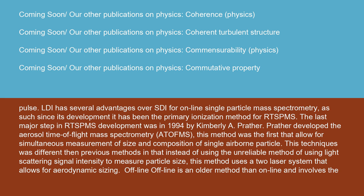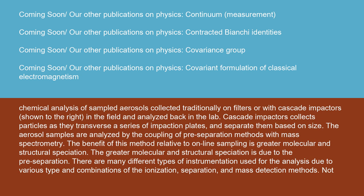Offline mass spectrometry is an older method than online and involves the chemical analysis of sampled aerosols collected traditionally on filters or with cascade impactors in the field and analyzed back in the lab. Cascade impactors collect particles as they traverse a series of impaction plates and separate them based on size. The aerosol samples are analyzed by the coupling of pre-separation methods with mass spectrometry. The benefit of this method relative to online sampling is greater molecular and structural speciation, due to the pre-separation. There are many different types of instrumentation used for the analysis due to various types and combinations of ionization, separation, and mass detection methods.